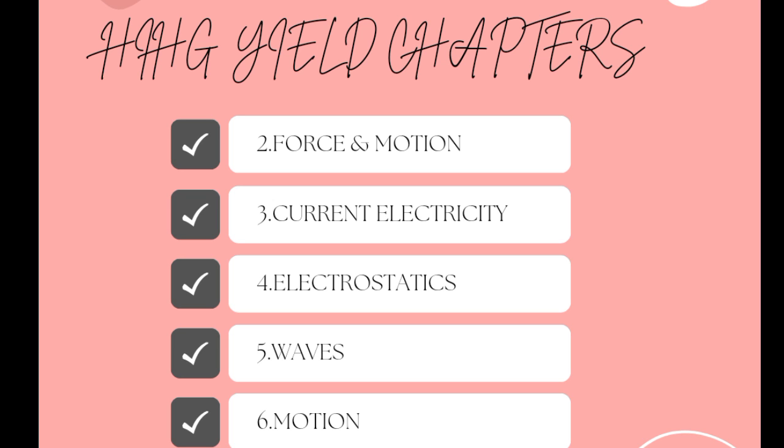So for physics, the most important six high yield chapters are: Motion, Waves, Electrostatics, Current Electricity, Force and Motion, and Work and Energy. In sub-units, formulas aapke finger tips pe honne chahiye hain. Definitions aapko pata honne chahiye hain.